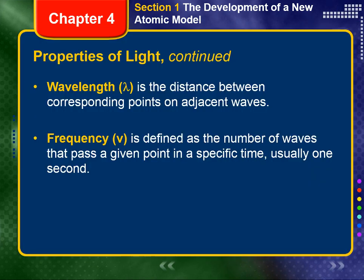The significant feature of wave motion is its repetitive nature, which can be characterized by the measurable properties of wavelength and frequency. Wavelength, represented by the Greek symbol lambda, is the distance between corresponding points on adjacent waves. Depending on the particular form of electromagnetic radiation, the unit for wavelength is the meter, centimeter, or nanometer. 1 nanometer is equal to 1 x 10 to the negative ninth meters, as shown in Figure 4-1.